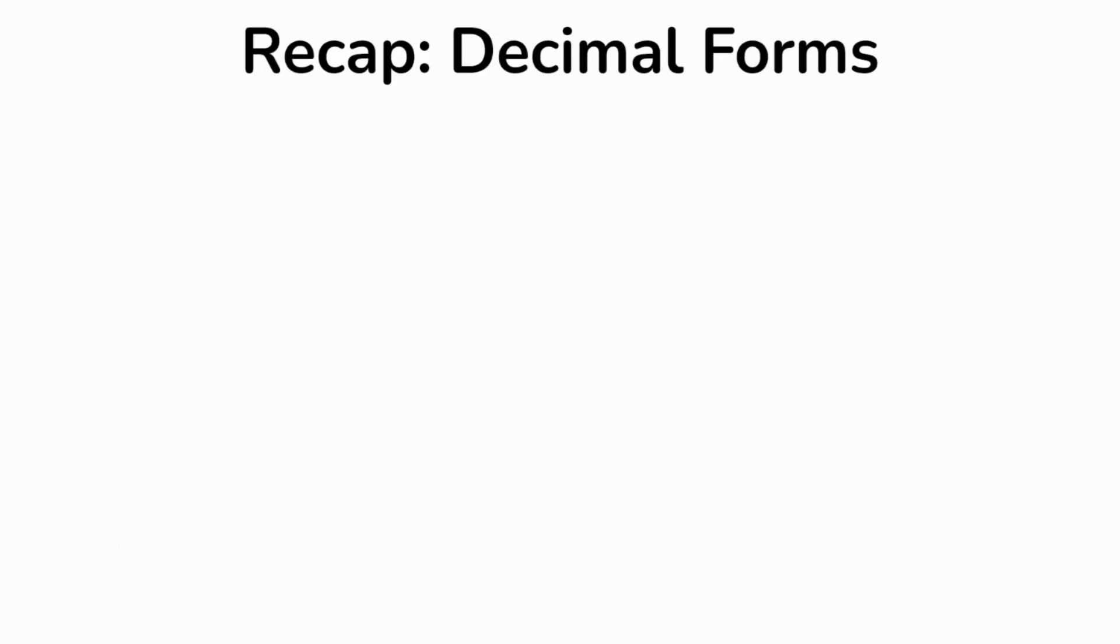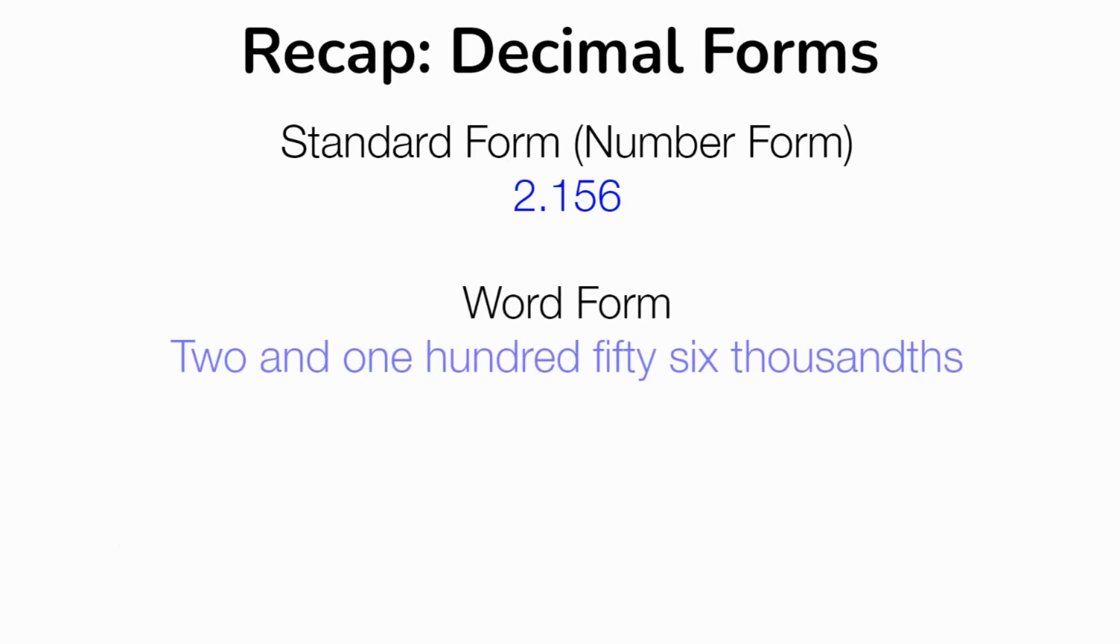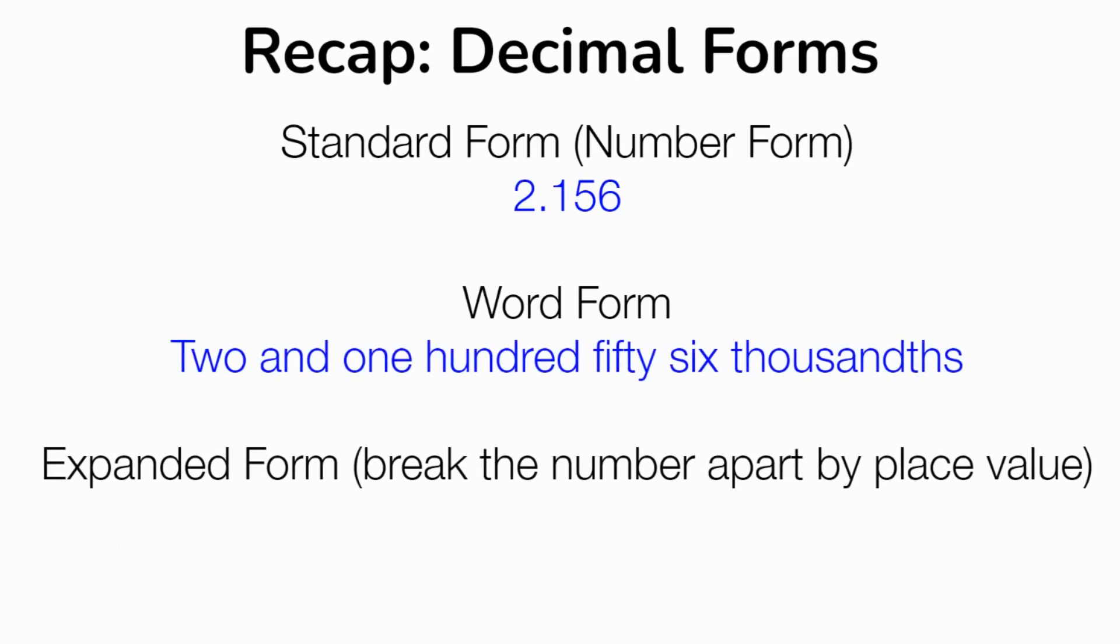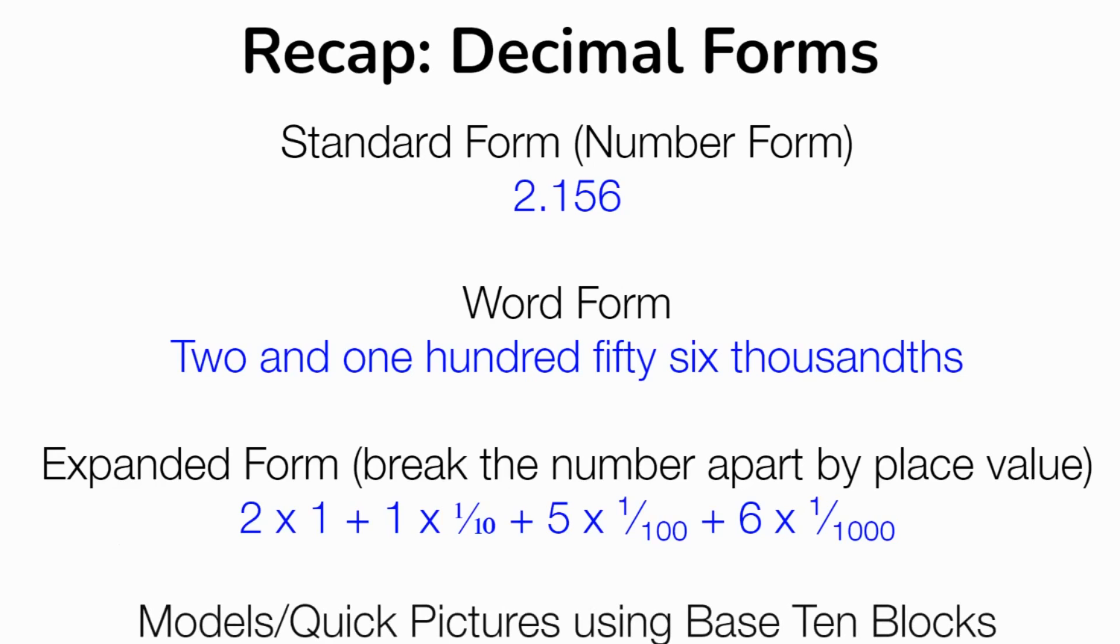And our recap, just really fast. So standard form is basically the same thing. It means number form. So there's a number written in standard form. Word form, you're replacing the numbers with words. And then there's expanded form where we are kind of breaking down, breaking the number down by place value. So this number is two-and-one-hundred-fifty-six-thousandths. And expanded form, that means I have two copies of a one. I have one copy of a tenth. I have five copies of one one-hundredth. And adding six copies of one one-thousandth. And then there's also models or quick pictures using base 10 blocks, which we're not going to use too much. But they can still be helpful. We will use them more when we start to practice adding and subtracting decimals.